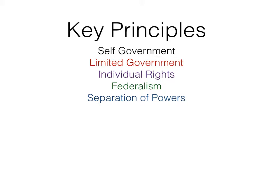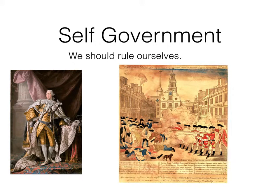These are the big ones. Self-government: a lot of countries, especially back then, were not self-governed — they were colonies, especially of England. Think about India, which was ruled as a colony of England for a long time. Americans have this idea that they do not want to be a colony anymore. We want to rule ourselves, and that's firmly ingrained in us as Americans. This started when King George III began putting all those taxes on us and the colonists said no.